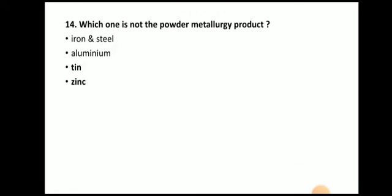Next question: Which one is not a powder metallurgy product? The answer is zinc. You can produce iron and steel components, aluminium components, and tin components, but you cannot produce zinc components with the help of powder metallurgy.